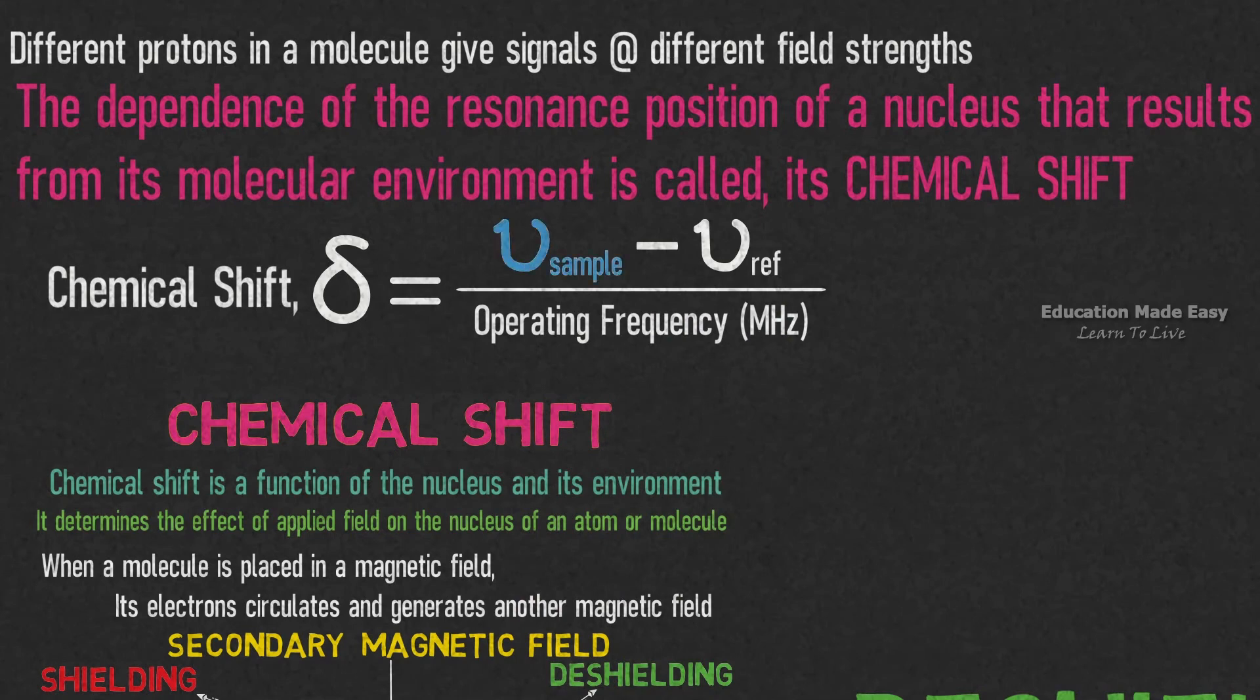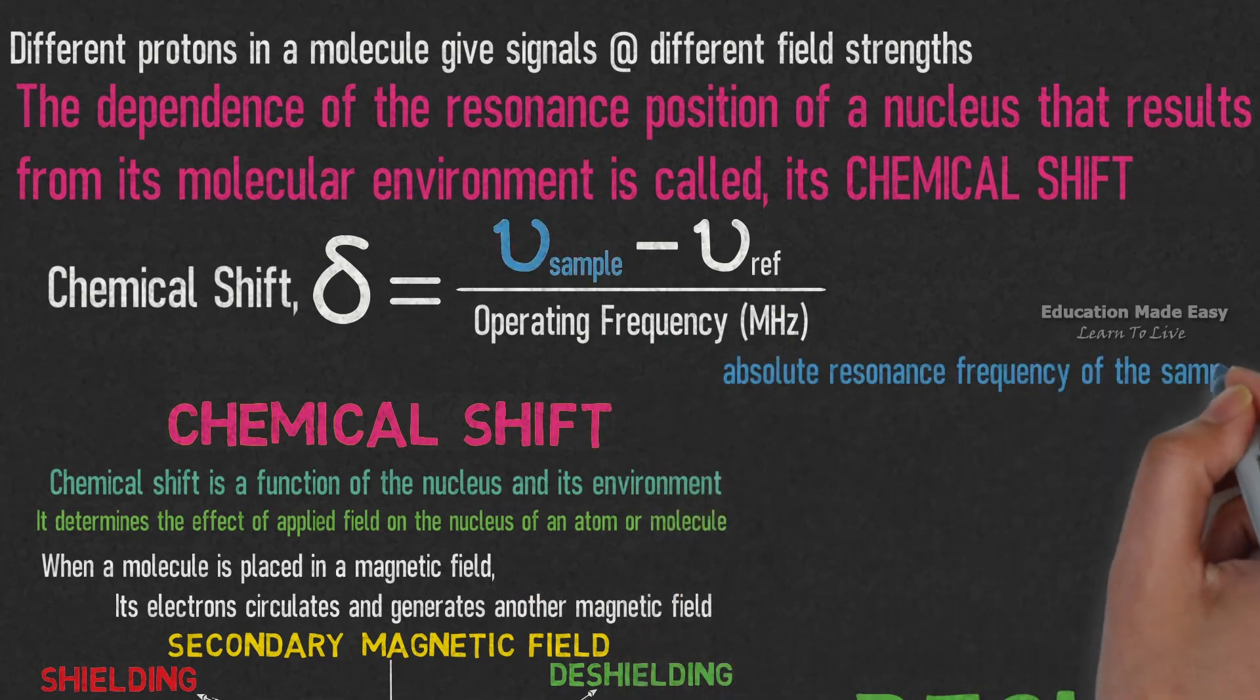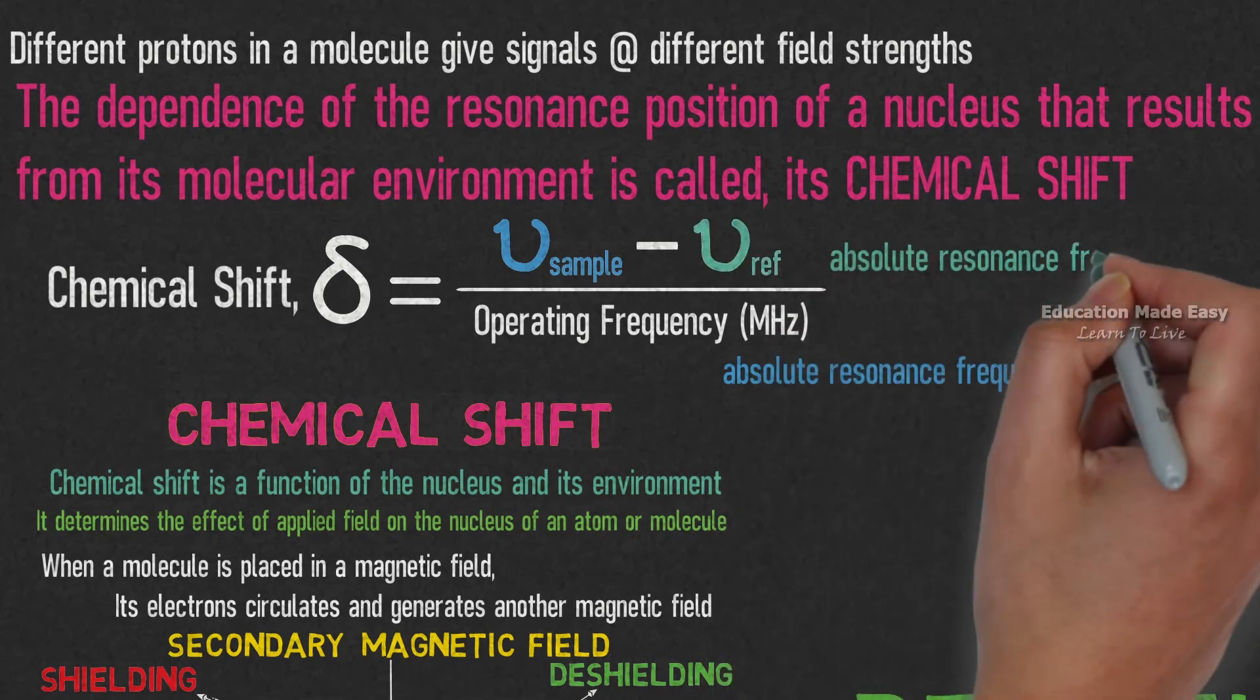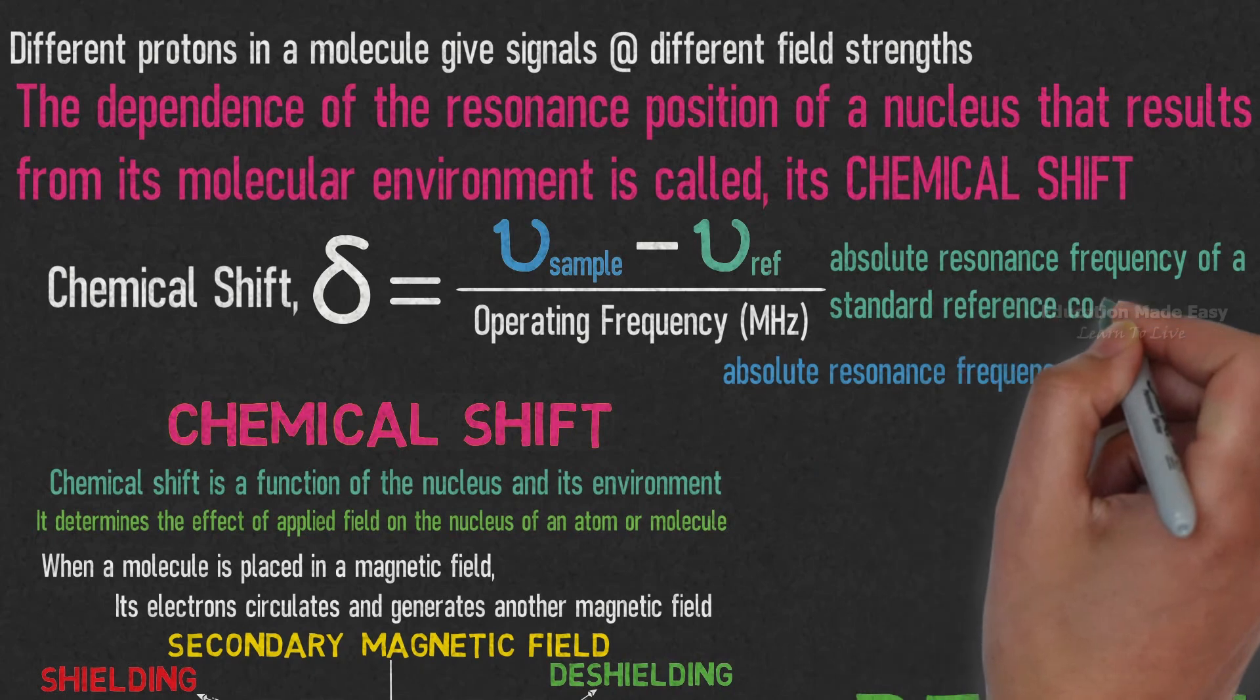Where mu sample represents the absolute resonance frequency of the sample, and mu reference represents the absolute resonance frequency of a standard reference compound.